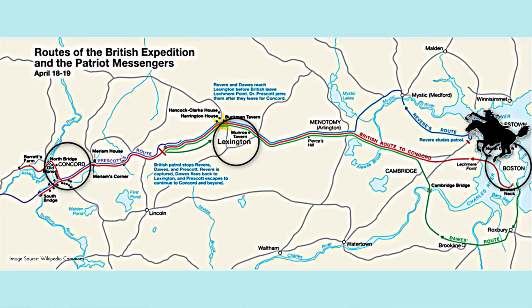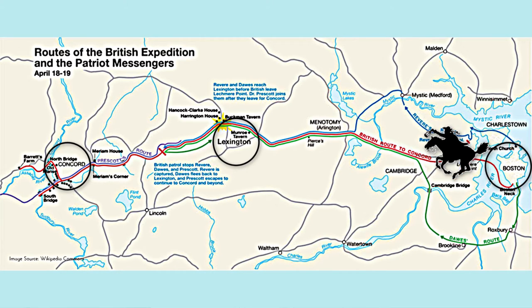This reading also contains the nearby towns of Lexington and Concord. So you would also point those out in relation to Boston, and you might want to show where Paul Revere rode from one point to the other.